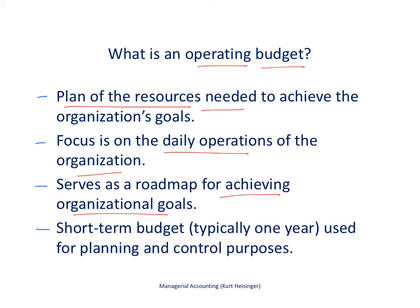As I mentioned before, the operating budget is typically a short-term budget, meaning within one year — we're looking ahead one year. It's used for planning and control purposes. The planning part is looking ahead, making sure we have enough direct labor, direct materials, and other resources to achieve our goals. Then it's for control purposes — after the fact, we look at whether we actually achieved the goals that we had set.